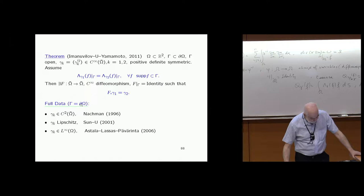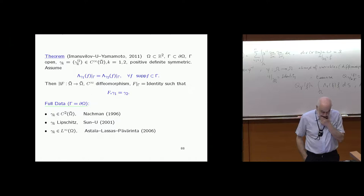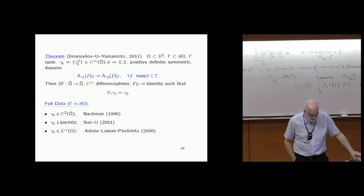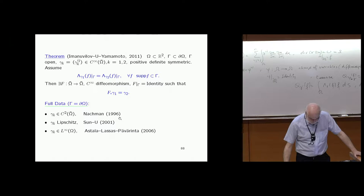The final result for full data and L-infinity conductivity was proved by Astala, Lassas, and Päivärinta using results of Astala and Päivärinta. In two dimensions you have isothermal coordinates, so the problem reduces to the isotropic problem. Once you have the isotropic case, it's much easier to prove this. In dimension two we know this.